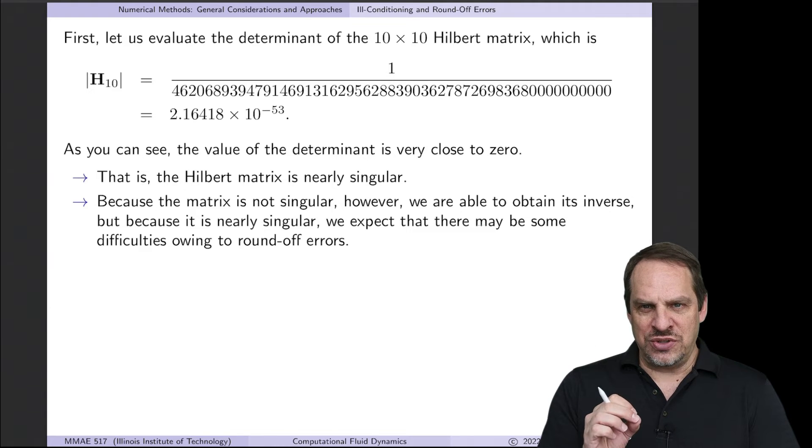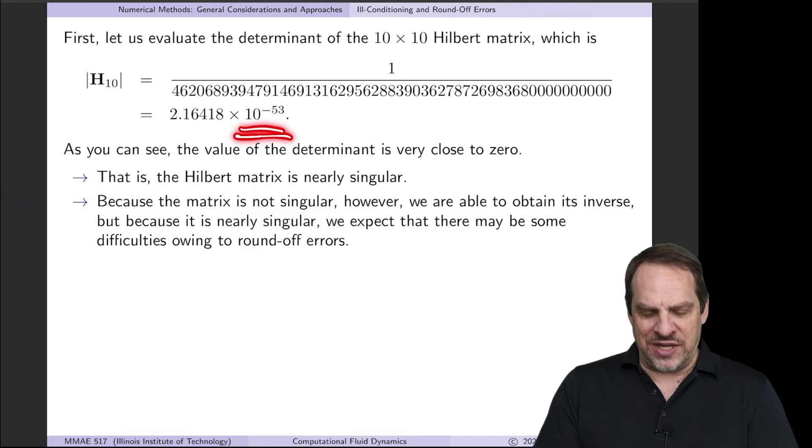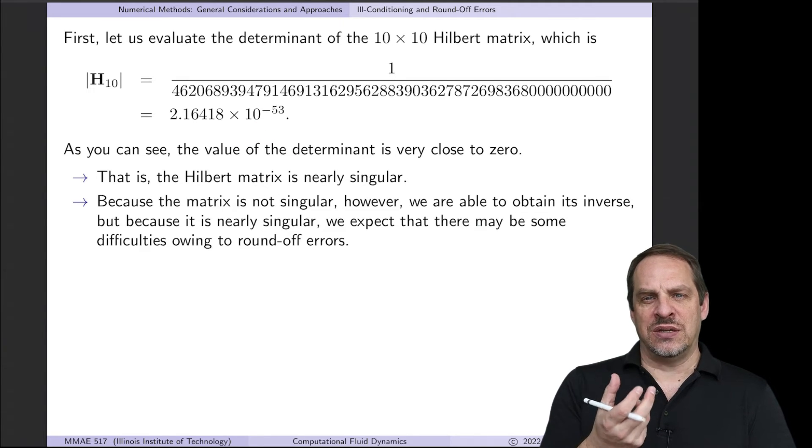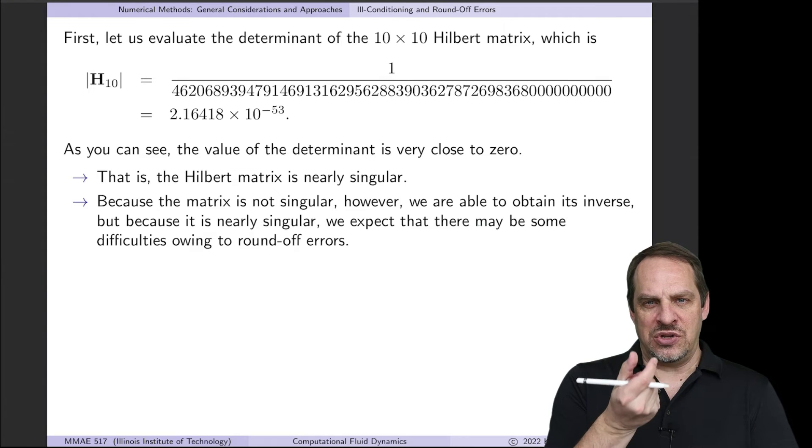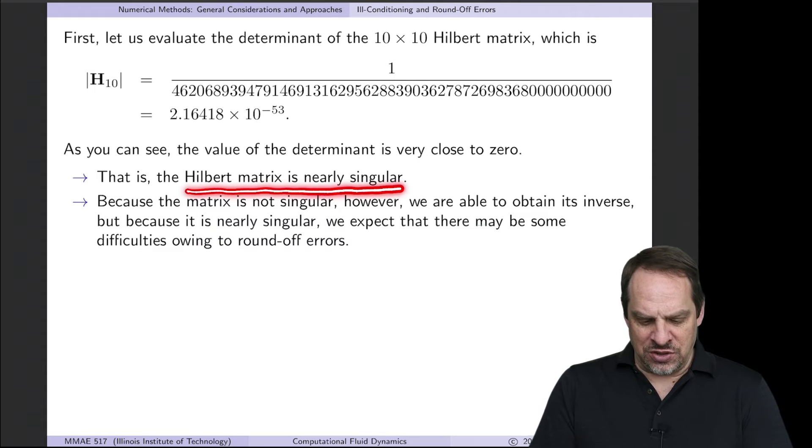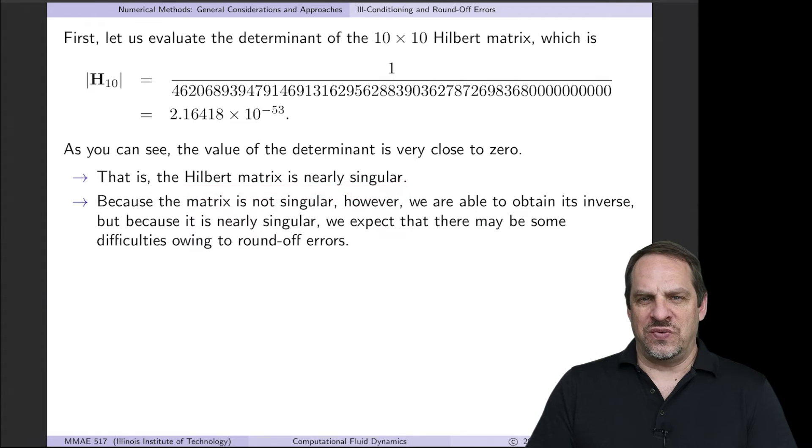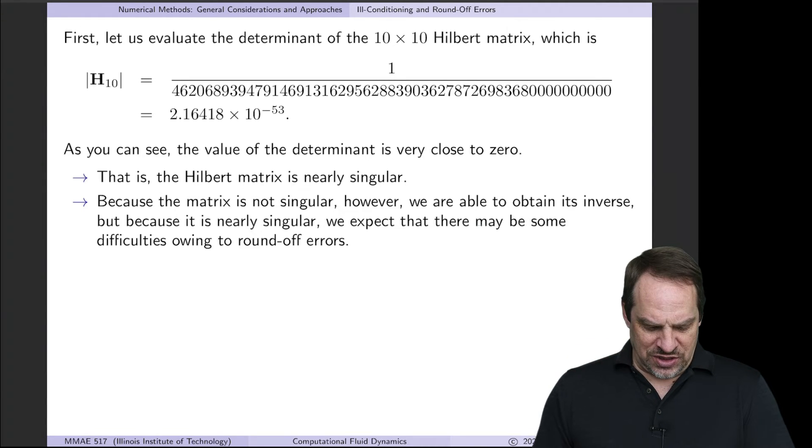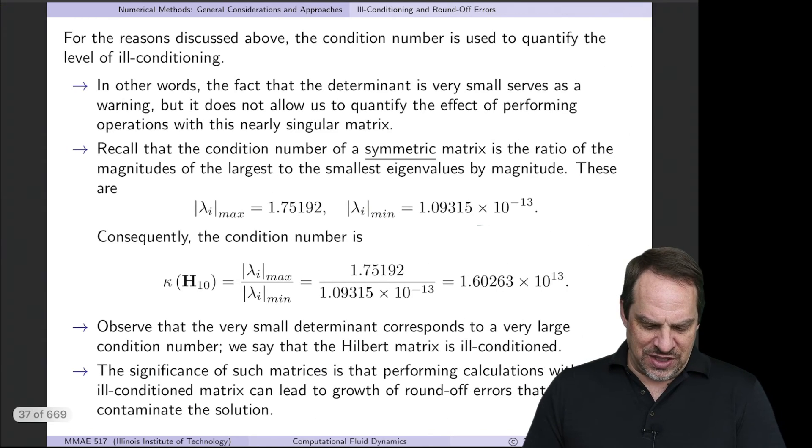So it's not equal to zero, but it's certainly very, very small. In fact, it's much less than zero in a machine precision sense. Remember, 10 to the minus 16 is a small increment that you can get in double precision on a digital computer. So the Hilbert matrix is very nearly singular. It's not singular. We can get the inverse, and we will. I'll show you that in a moment. But it's very, very nearly singular. So we would expect it to be ill-conditioned.